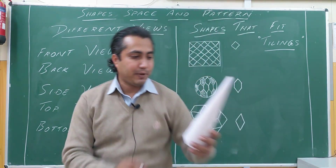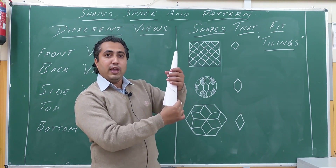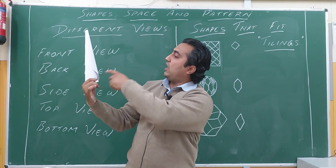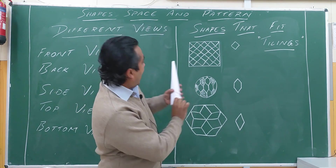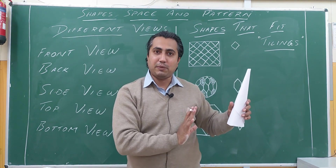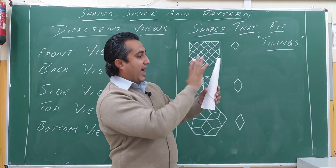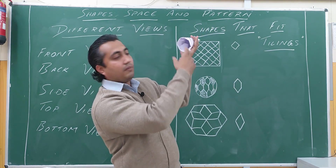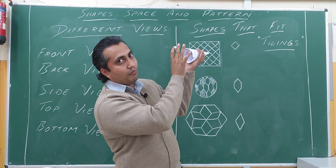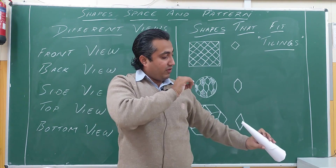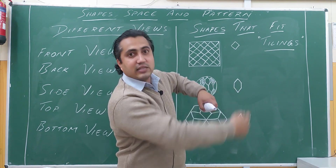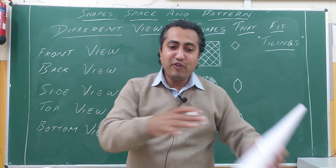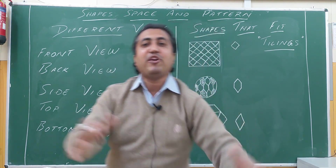Now let us look at one more shape — this is a cone. If we are looking from the side, from the front, or from the back, we will be able to see the same shape. So side, front, and back views may be the same. If you look from below, you will be able to see a circle — that is the bottom view. If you look from the top, you will see a center dot — that is the top view.